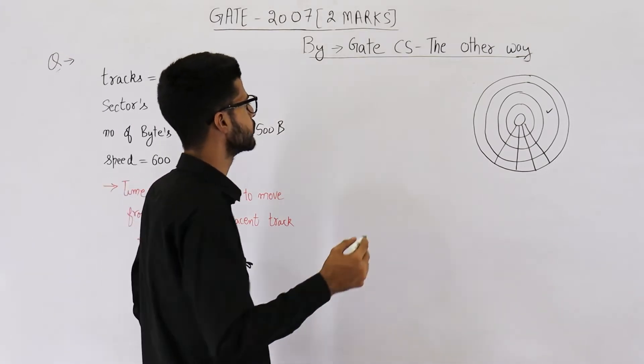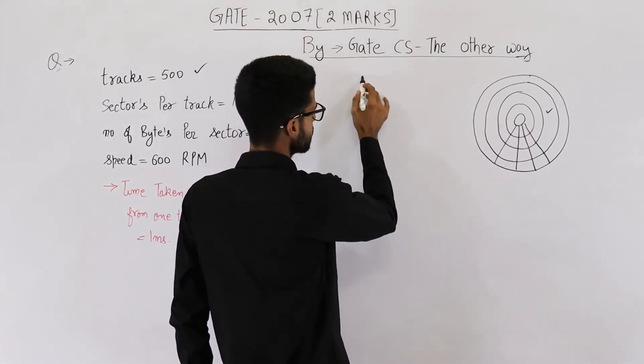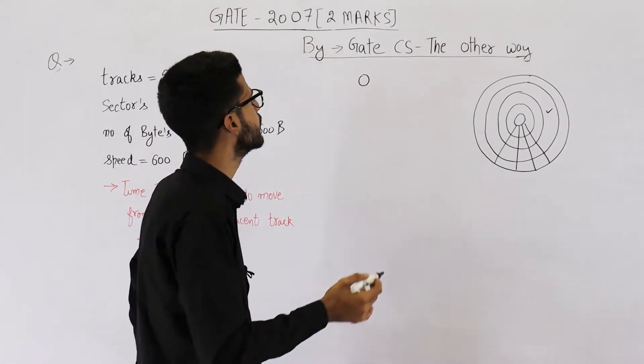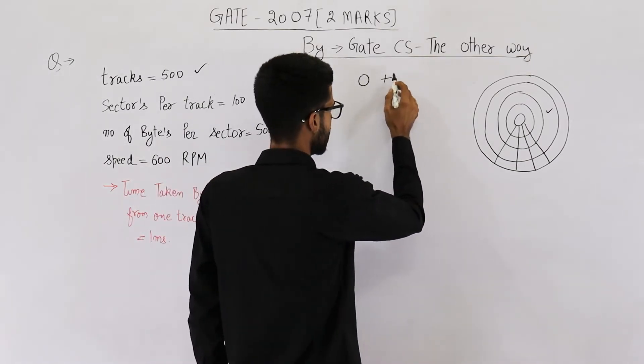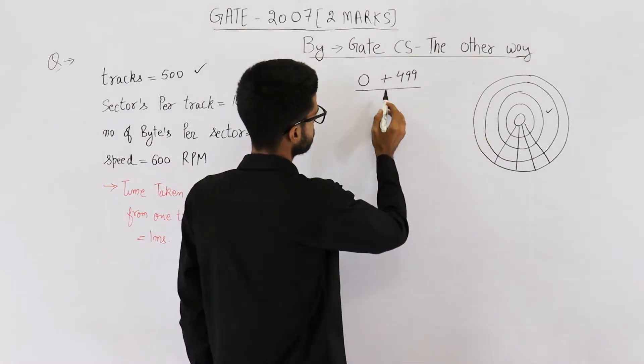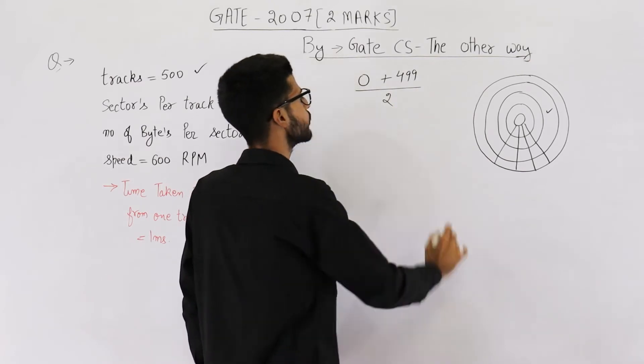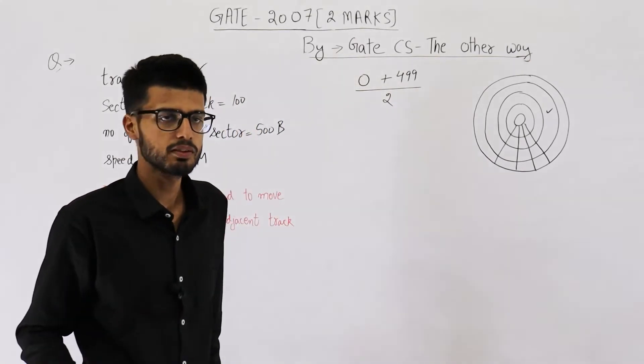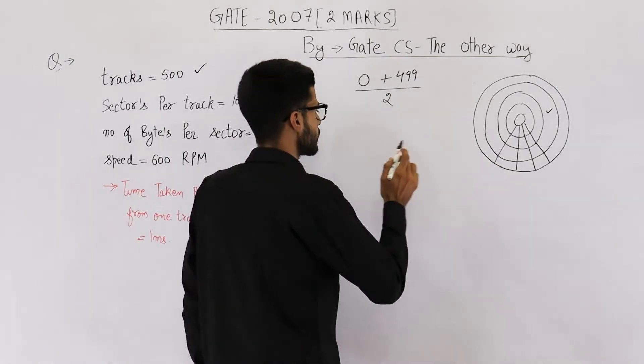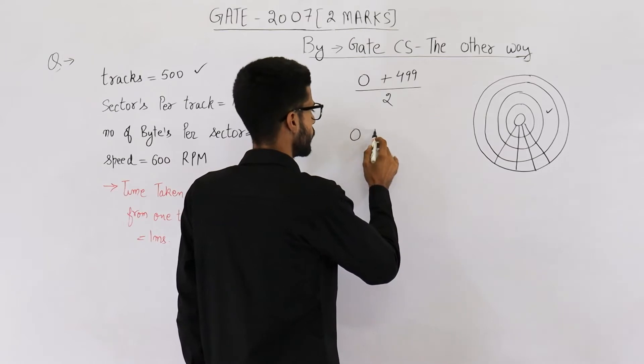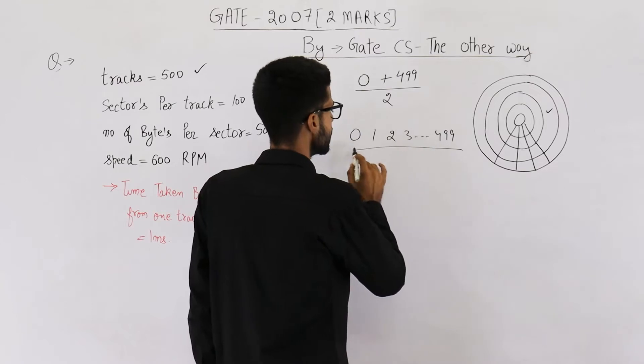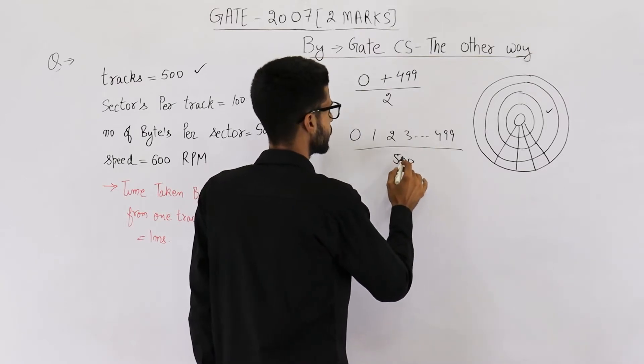So let's find the average movement. One case is you need no movement. Second case is you might require 499 movements. One movement for each track. To find out average, you will divide it by 2. Or you can also do it in another way. What you can do is take all the possibilities: zero movements, one movement, two, three, so on till 499, and just take its average.